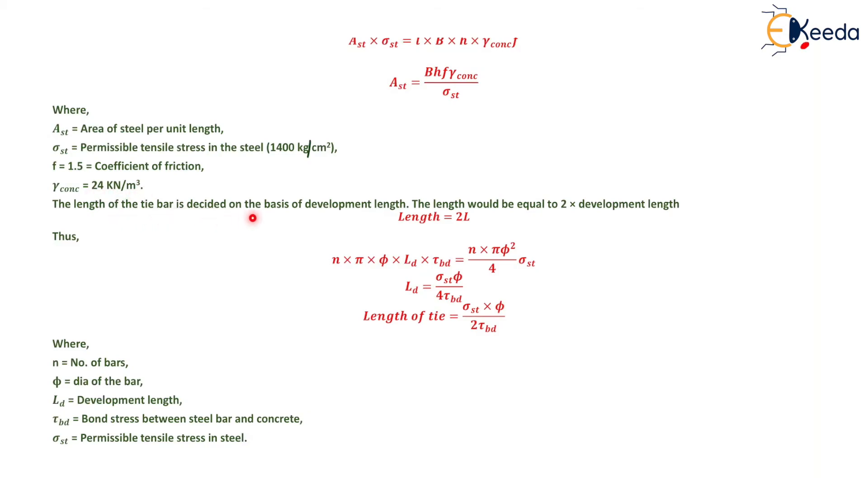The length of the tie bar is decided on the basis of development length. The length would equal 2 times the development length, so length = 2Ld. Thus, n·π·φ·Ld·τbd = n·π·φ²/4·σst. So the length of tie bar equals σst·φ/(4τbd).